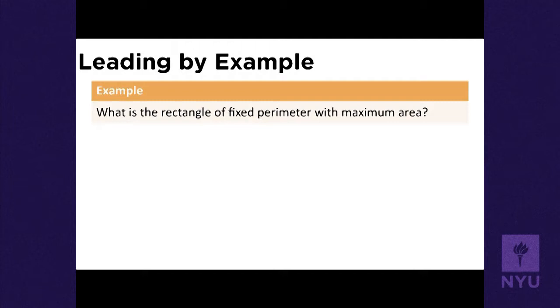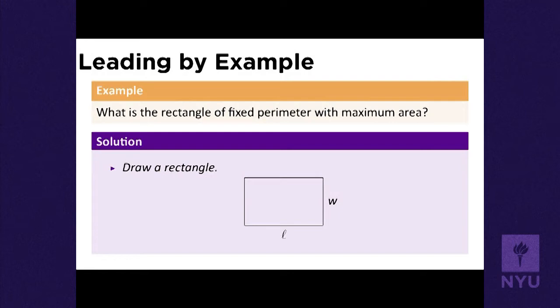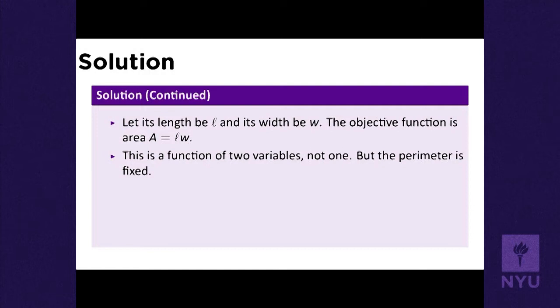I'll start with a basic example, and from that example we'll extract a framework that'll work in general. So the basic problem here is: what is the rectangle of fixed perimeter with maximum area? You might already have a guess as to what the answer is, but let's work it out using calculus. So let's remember what a rectangle looks like — it's got a length and a width. The area of a rectangle is length times width, and that is the thing that we want to make the largest.